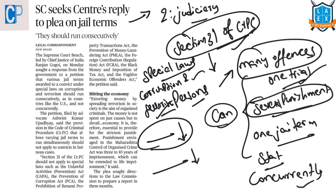From the prelims point of view, we should know all the laws mentioned here: the Unlawful Activities Act, Prevention of Corruption Act, Prohibition of Benami Property Transactions Act, Prevention of Money Laundering Act, Foreign Contributions Act, Black Money and Imposition of Tax Act, and the Fugitive Economic Offenders Act. We have discussed all these acts in previous core videos, but if you want, we will try to make a separate video covering all these acts.